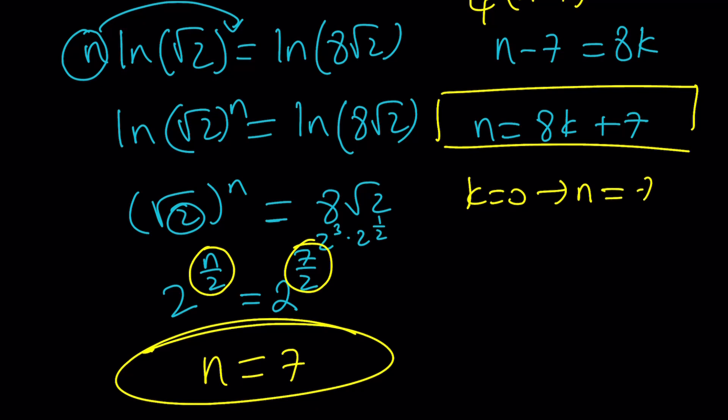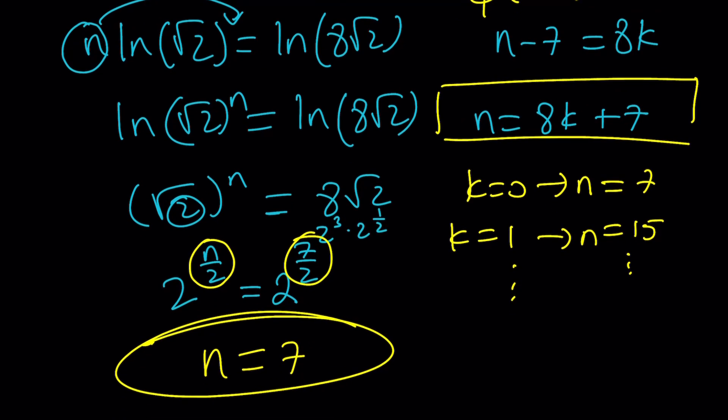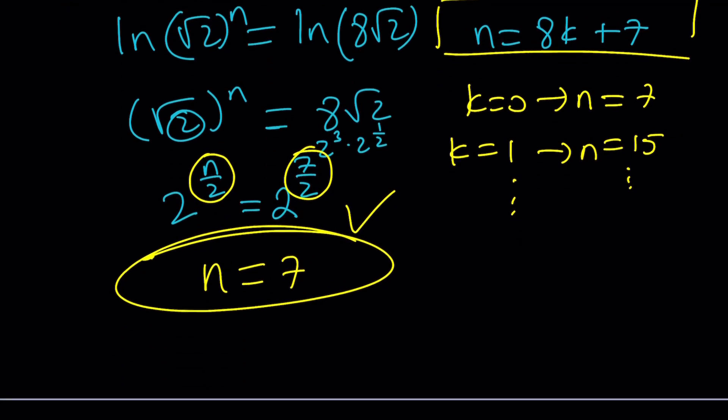If k equals 1, n is going to be 15, so on and so forth. The problem is though, n = 15 does not satisfy the first equation, which is this one. So n = 7 is the only solution, and that is the solution to this problem.